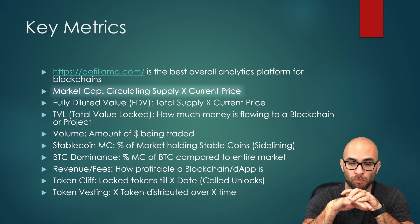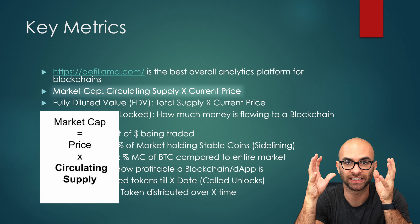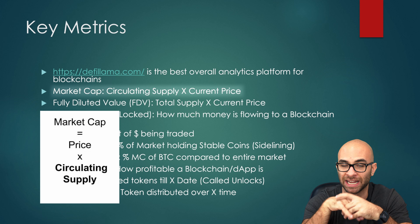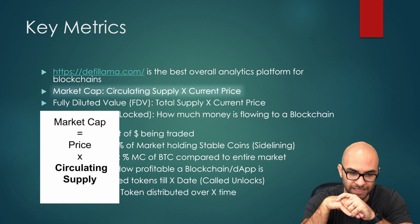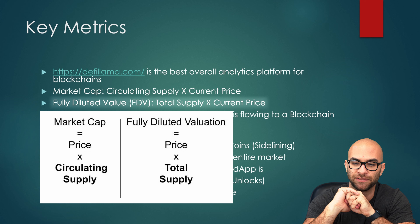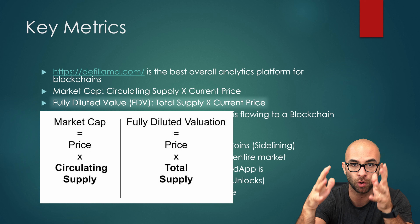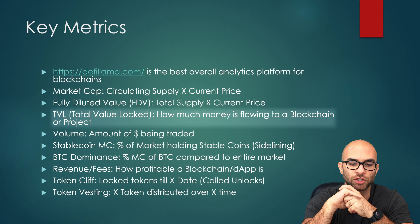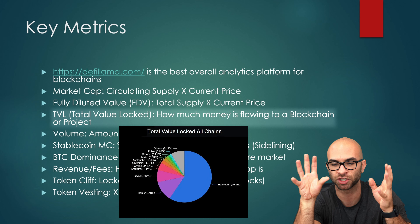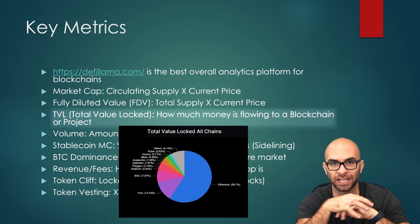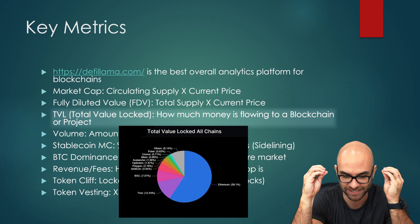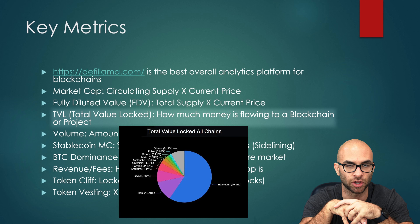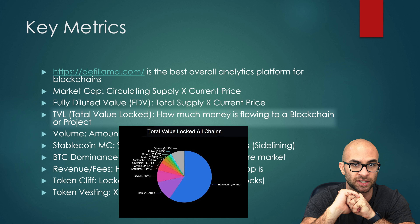First thing is market cap. Market cap is just taking the circulating supply, which is all the tokens that are actually out there in the wild, and multiplying by the current price. Fully diluted value, or FDV, is the total supply times the current price of the token. TVL is total value locked — this is how much money is flowing into a blockchain or a specific project, the money that is actually being locked into the dApps or decentralized applications in those ecosystems.